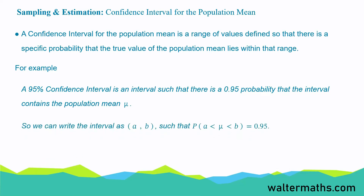So, we can write the interval as (a, b) such that the probability that the population mean mu lies between a and b is equal to 0.95.